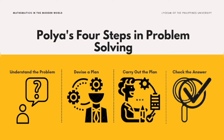After understanding the problem, we need to devise a plan, which is Step 2. When you devise a plan — or translate, as others call it — you come up with a way to solve the problem. There are ways you can go about solving your problem, like setting up an equation, drawing a diagram, or making a chart. You could also make a systematic list of the given so that you can spot the important data right away. You could also look for a pattern, or revise the problem by simplifying it and solving each part.